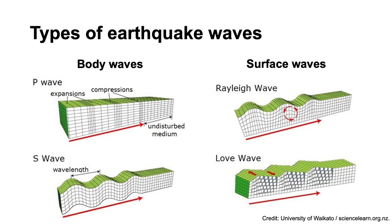There are several types of earthquake waves. P waves and S waves travel through the Earth's interior and are known as body waves, while R waves and L waves travel just below the Earth's surface and are known as surface waves. P waves, or primary waves, are the waves that travel the fastest and arrive at detectors first. They're compressional waves, so the sense of movement is in a series of expansions and contractions, and they can travel through any kind of material, solid or liquid.